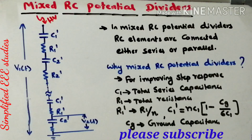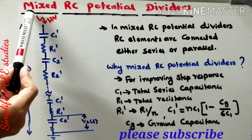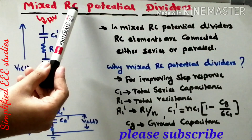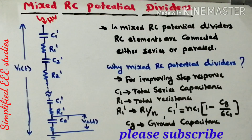In this video, I am going to explain what is meant by Mixed RC Potential Divider. R stands for Resistor and C stands for Capacitor.